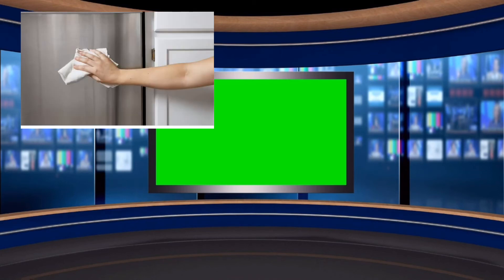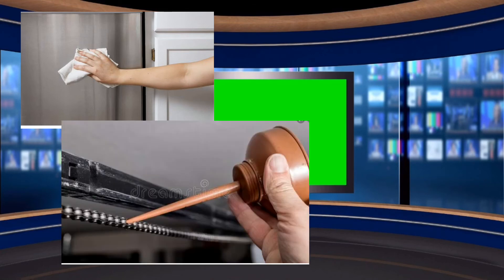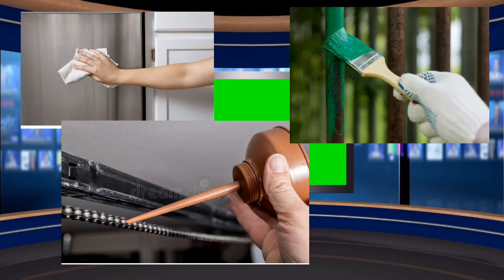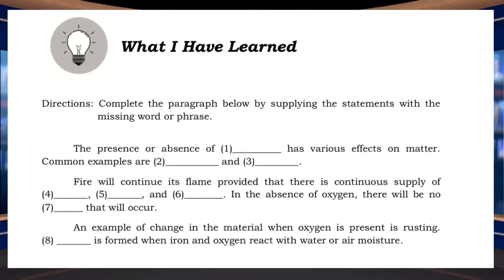Water and oxygen are enemy number one when it comes to rust. To prevent iron from rusting, we need to keep it clean and dry, prevent scratches, and apply a protective coating such as oil, grease, or paint. Through painting, regular cleaning, and applying oil or grease, metals can be kept dry. This prevents oxygen from getting in, so they will not rust.